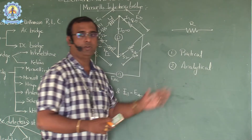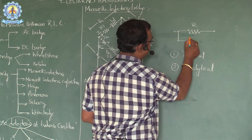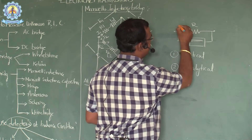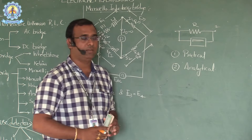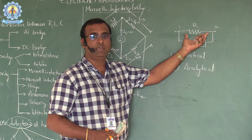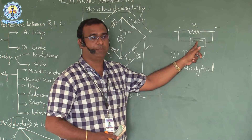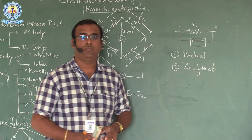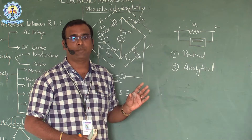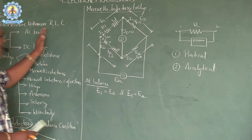If we go for the practical approach, we simply need to connect a multimeter, as we use in the lab. One terminal is connected to one end and another terminal to the other end. If we connect the multimeter to the unknown resistance, it will directly give the value on the seven-segment display. On the other hand, if we want to go for the analytical approach, it needs some experimental setup, which we call bridge networks.